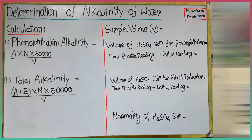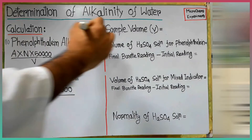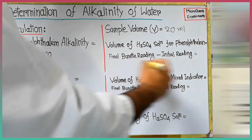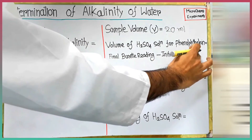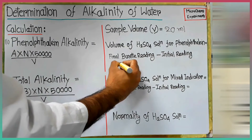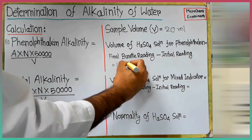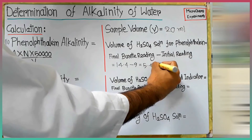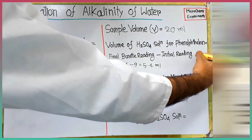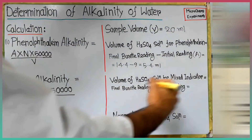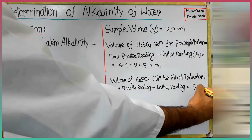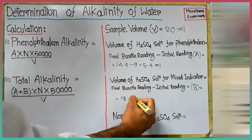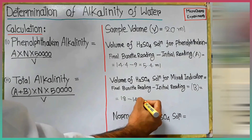Now we have to calculate the alkalinity of our sample. We took 20 ml of water sample for testing, so V is 20 ml. Volume of sulfuric acid needed in the first session titration, A, is the final burette reading minus initial reading of the first session, which is 5.4 ml. Volume of sulfuric acid needed in the second session titration, B, is the final burette reading minus initial reading of the second session, which is 3.6 ml.